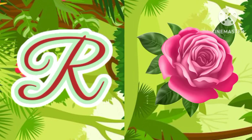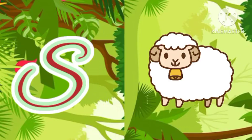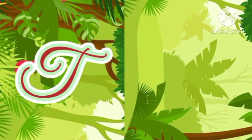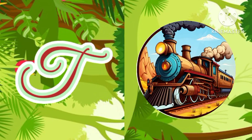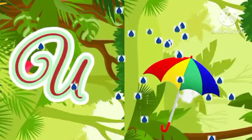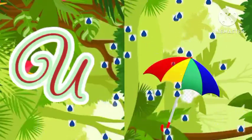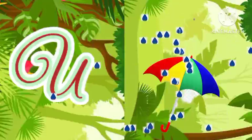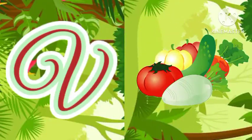S for ship, T for train, U for umbrella, V for vegetables.